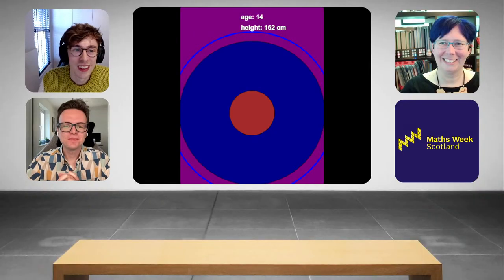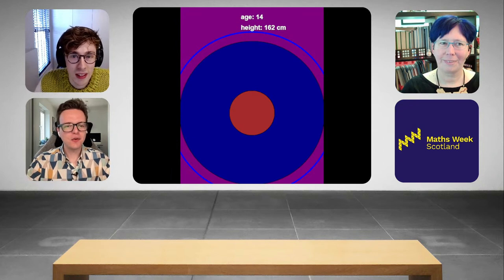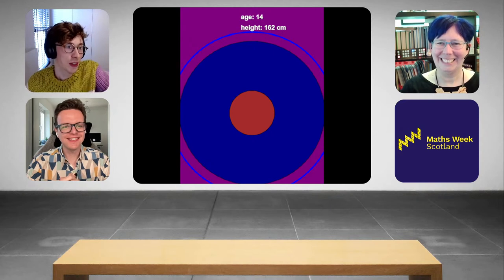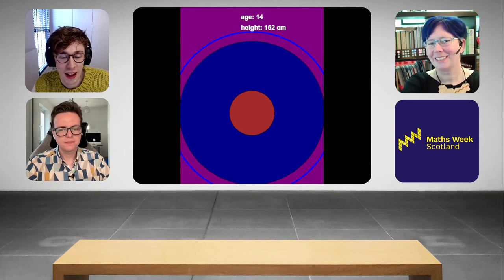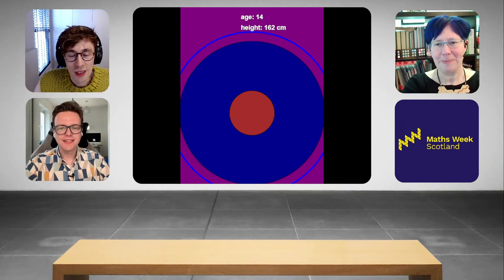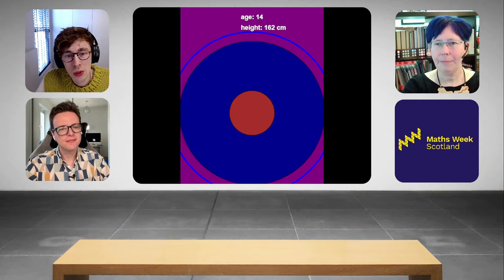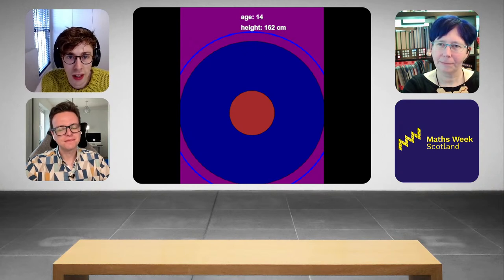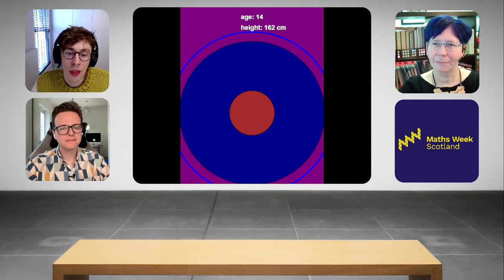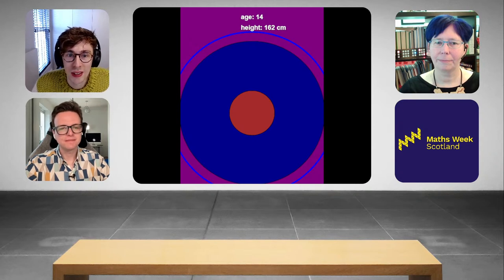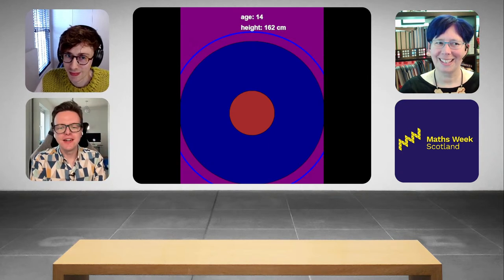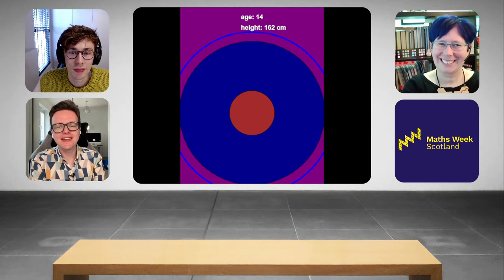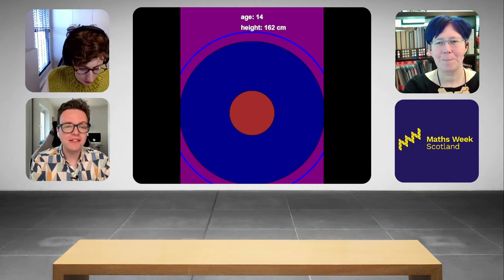Let's take a look at a few selfies that have been submitted — what a wonderful gallery. This is our first data selfie, submitted by Charlotte at Douglas Academy. Loving the colours — these colours actually represent things about Charlotte. The circle in the middle is a light brown colour, which means Charlotte has brown eyes — that's a piece of data Charlotte has encoded in her selfie. The circle that comes around that is to do with the colour of your socks, so Charlotte is wearing sort of lilac or dark purple socks today.